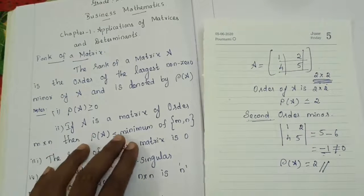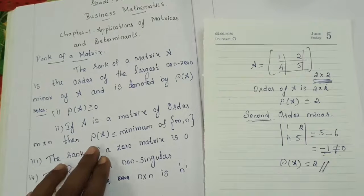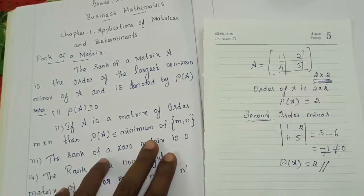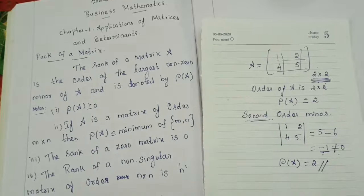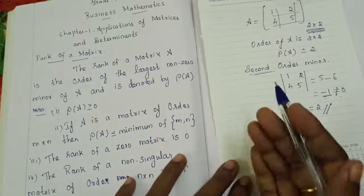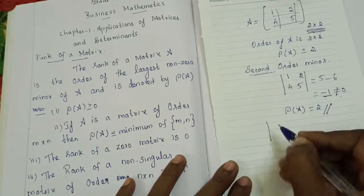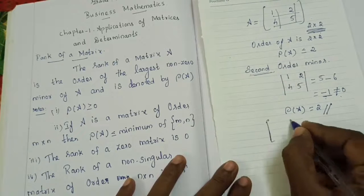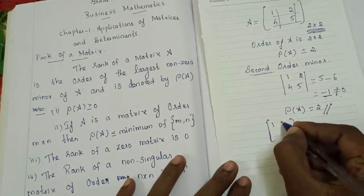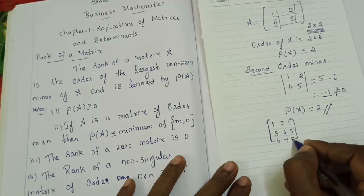Second note: if A is a matrix of order m cross n, then rho of A must be less than or equal to minimum of m, n. For example, if you take a matrix with 3 rows and 4 columns — that is a 3 cross 4 matrix — the minimum of 3 and 4 is 3, so rho of A must be less than or equal to 3.